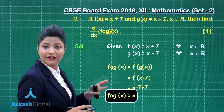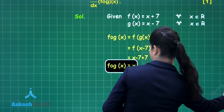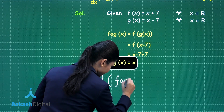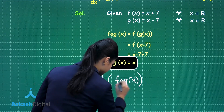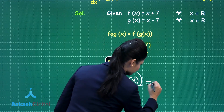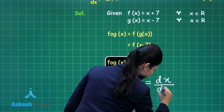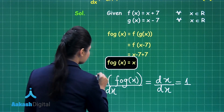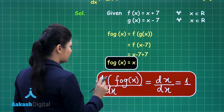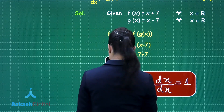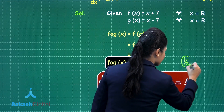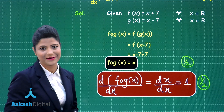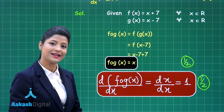Next I need to obtain the derivative of f(g(x)) with respect to x. When I differentiate f(g(x)) = x, d(f(g(x)))/dx = dx/dx = 1. So the final answer for this question is 1. If you obtain f(g(x)) you will get half marks, and on obtaining its derivative you get the other half mark, giving you a total of 1 mark. I hope this question is clear to you. Let us proceed to our next question.